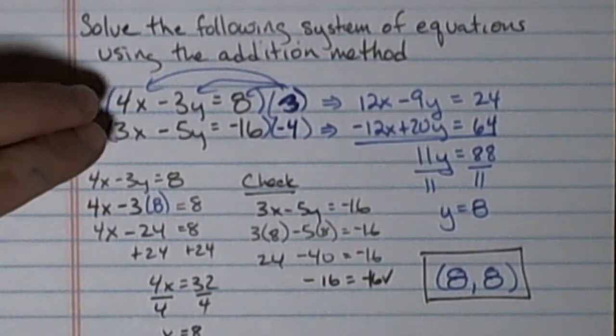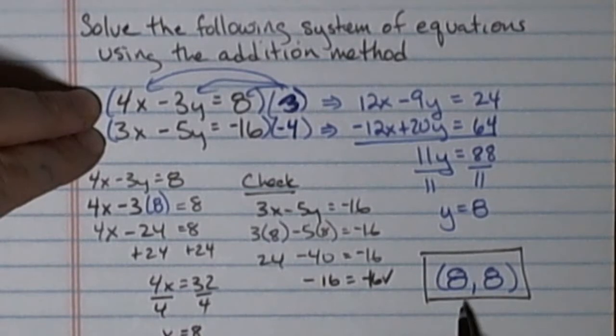Another way to say that is if I graph this system of equations, they would intersect at the point (8, 8).